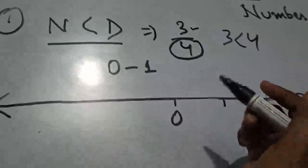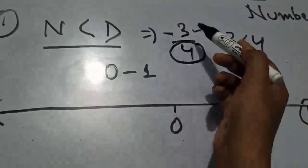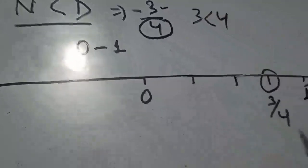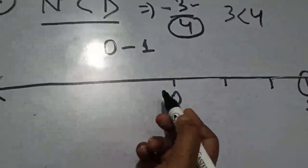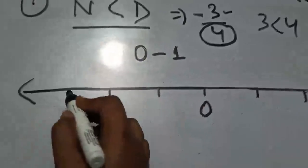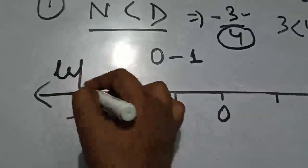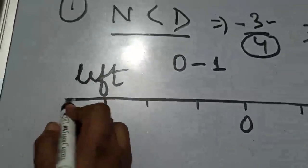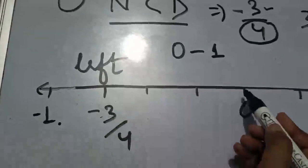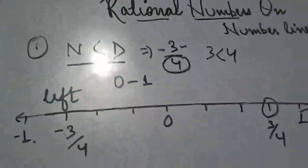Yahan par 3 by 4 ki jagah agar minus 3 by 4 de diya jaye, to same process follow karein. 3 by 4 yani numerator chota denominator se — 0 aur 1 ke beech mein aayega. Lekin minus ka matlab left side mein — 0 aur minus 1 ke beech mein aayega, same distance par: 1, 2, 3. To yahan minus 3 by 4 aayega. Clear hai?